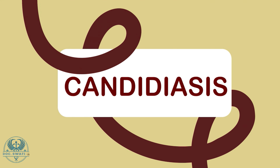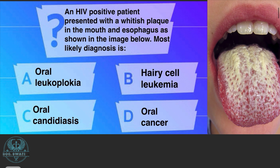Let's begin today's discussion by solving an MCQ. An HIV positive patient presented with a whitish plaque in the mouth and esophagus as shown in the image. The options are: A) oral leukoplakia, B) hairy cell leukemia, C) oral candidiasis, or D) oral cancer. The correct answer is option C, oral candidiasis.